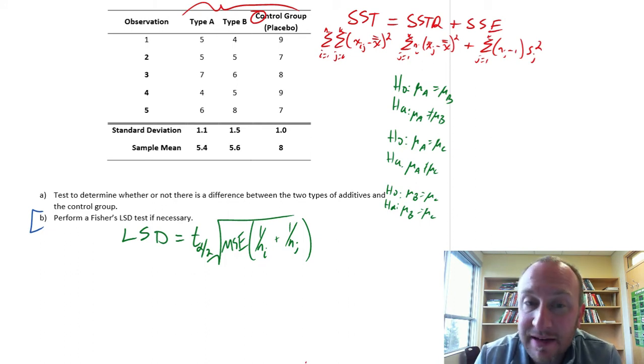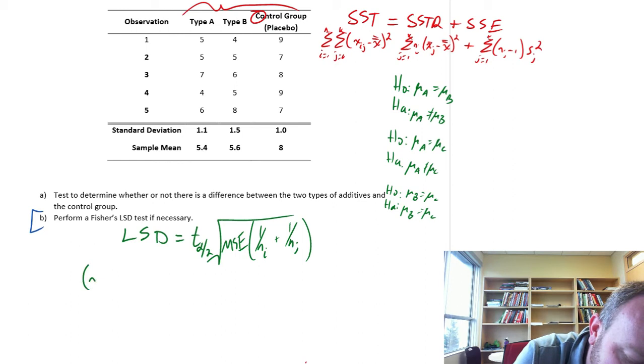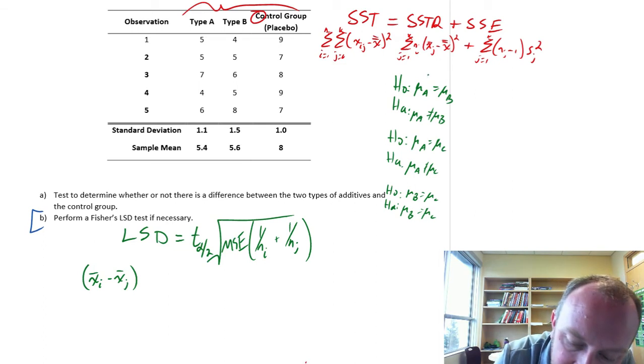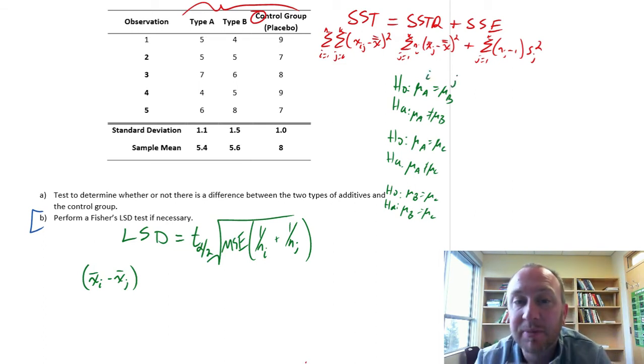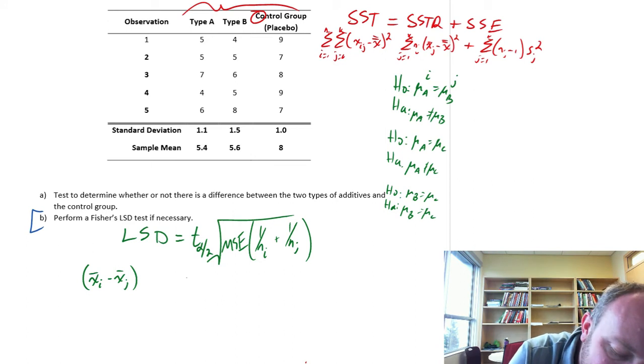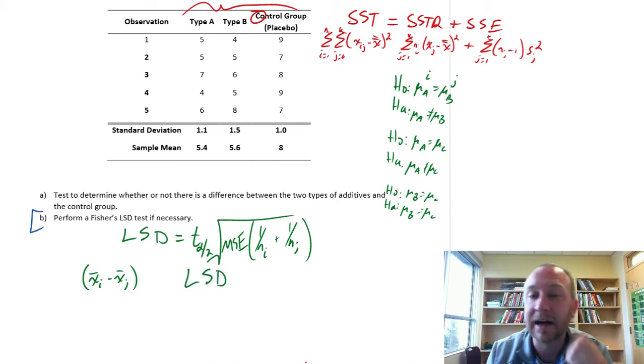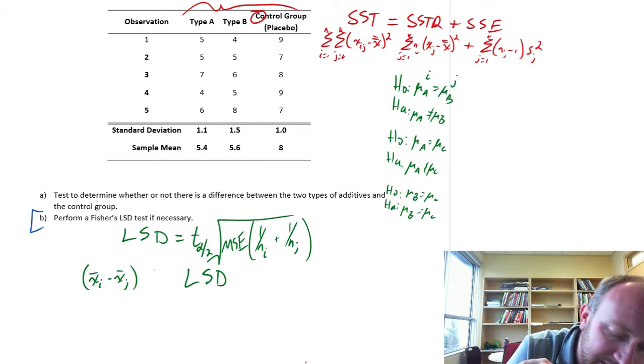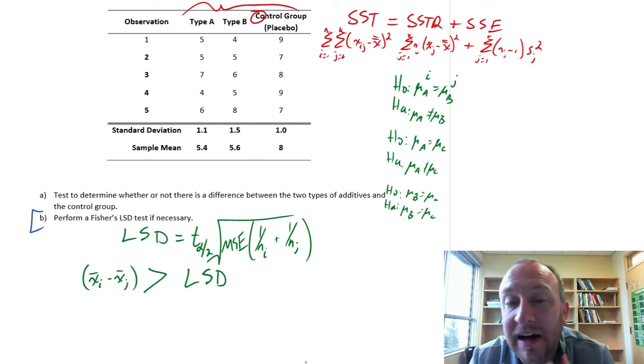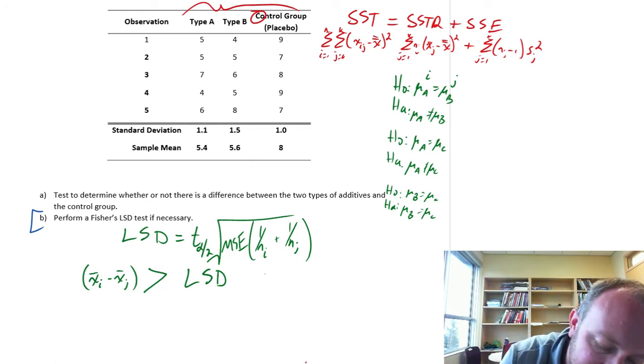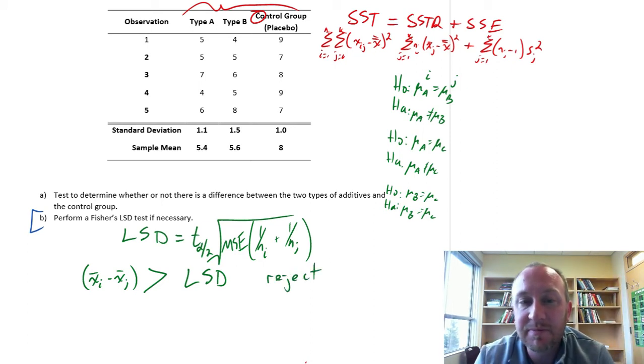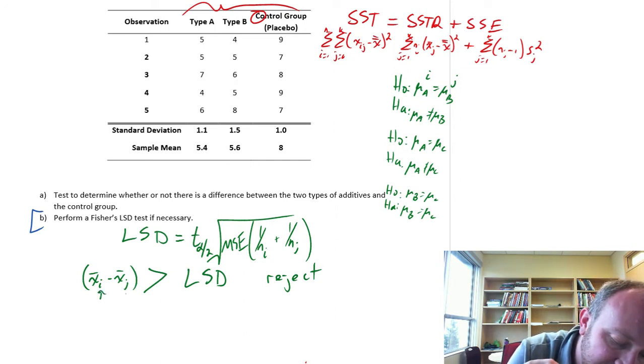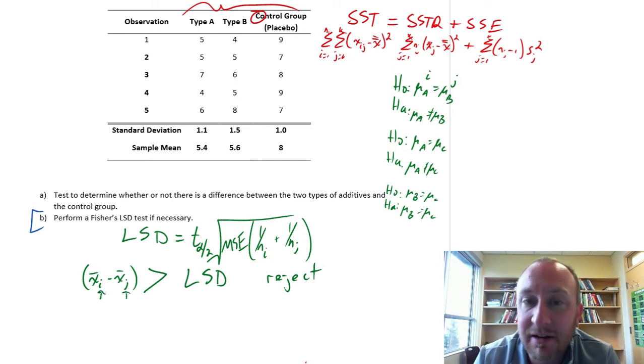Then to perform the tests, what we will be doing is comparing each of these differences in sample means, so i and j corresponding to our different sample means, and we compare this to our calculated LSD. If that point estimate of the difference in the sample means, if that's greater than the value of our LSD, or our least significant difference, then that allows us to reject that set of hypotheses that corresponds to whichever two different samples we're comparing.